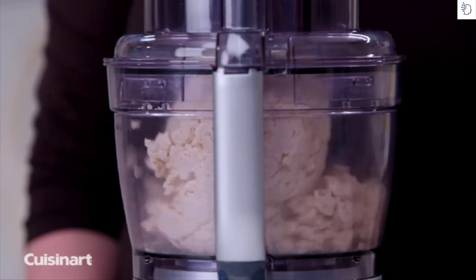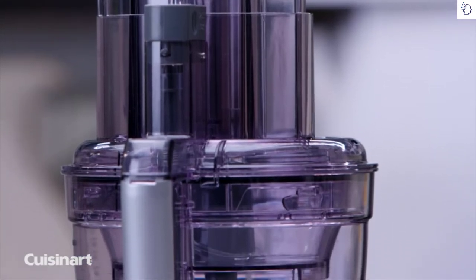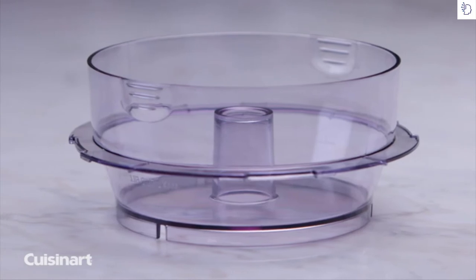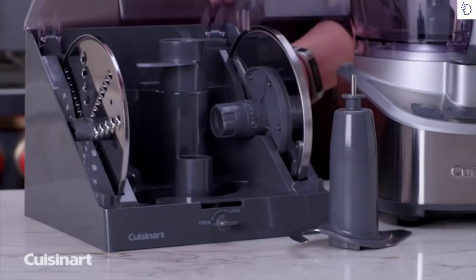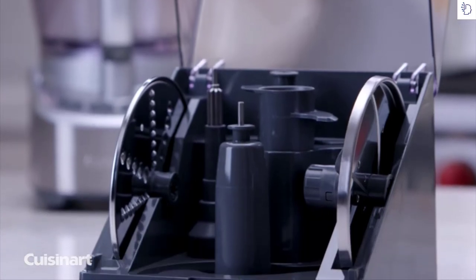Use the dough blade to create delicious homemade bread and pizza dough in minutes. This stainless steel Cuisinart food processor comes equipped with a 13-cup work bowl, a 4.5-cup nesting work bowl, and a convenient space-saving locking storage case, which safely houses all of your accessories.